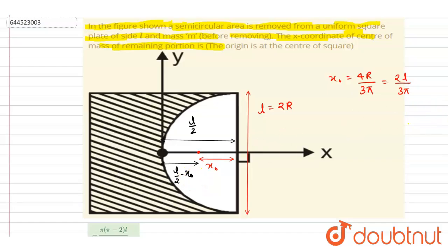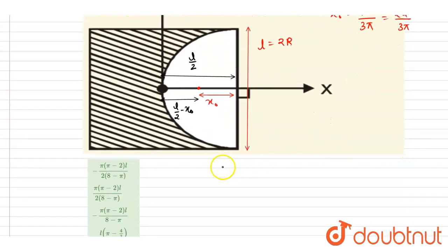If you see here the masses of the two, let's say it is m₁ and m₂, mass of the square and mass of the semicircular disc.